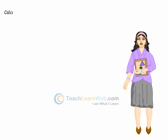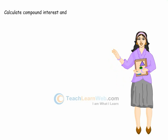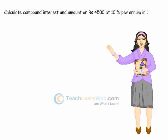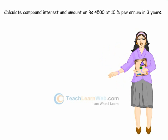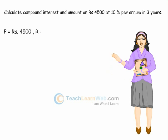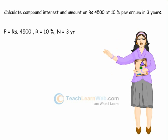Calculate compound interest and amount on Rs 4,500 at 10% per annum in 3 years. Here, P is equal to Rs 4,500, R is equal to 10%, and N is equal to 3 years.